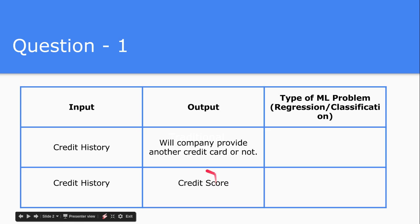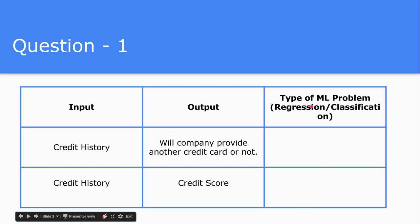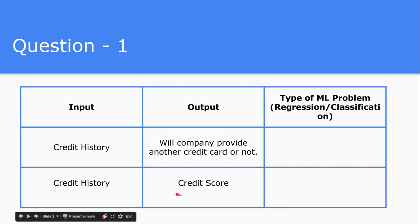Now let's see the second one — the credit score. A credit score is nothing but a continuous value; it can lie between 0 to 100, or whatever range the company has defined based on their protocol. Since it's a continuous value, this kind of problem lies inside regression. So the first one is a classification problem and the second one is a regression problem, because the credit score is a continuous value, while whether to give another credit card or not is a classification problem.